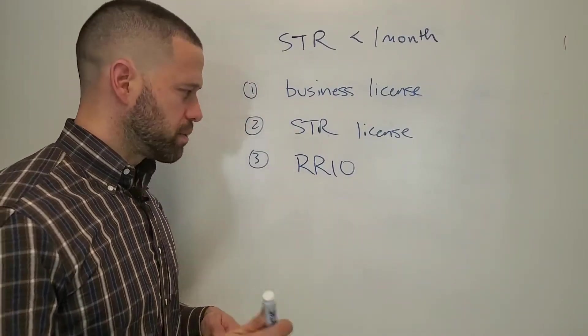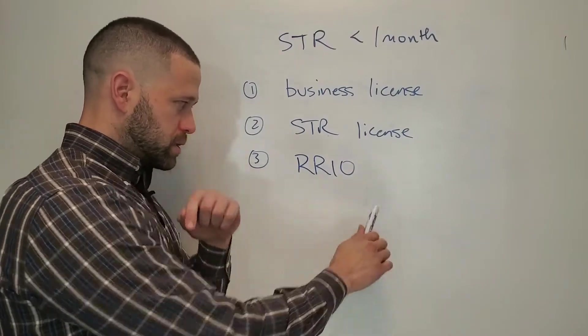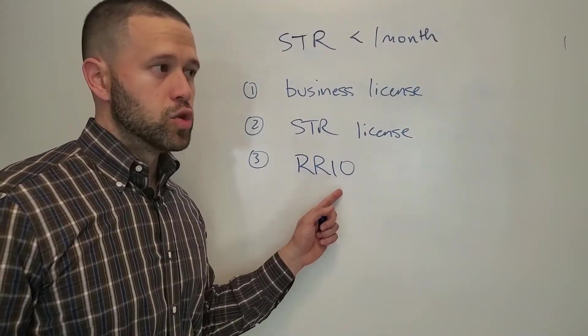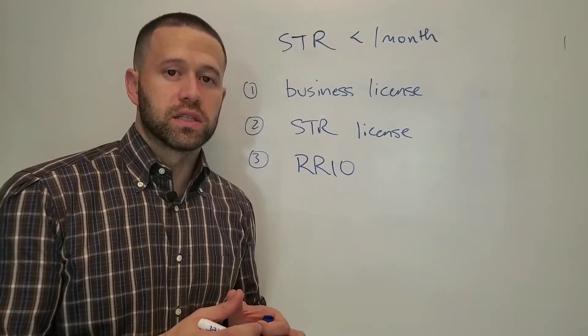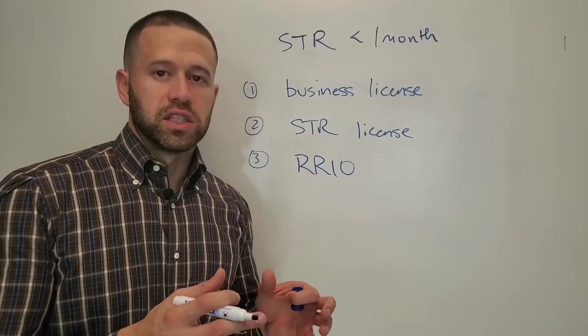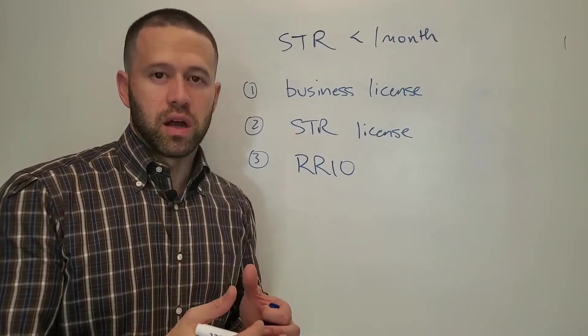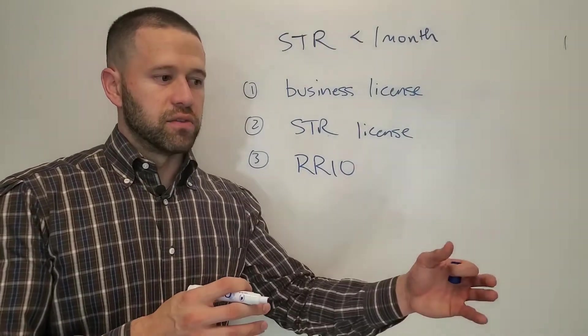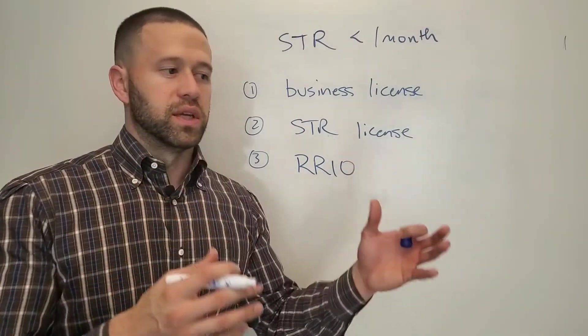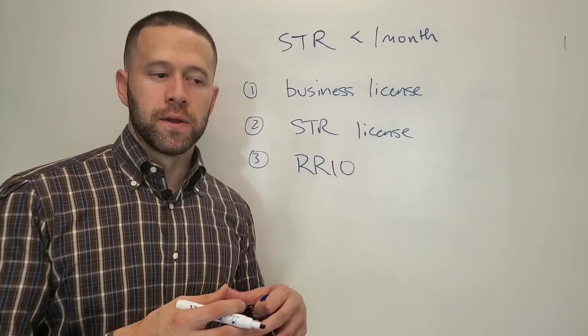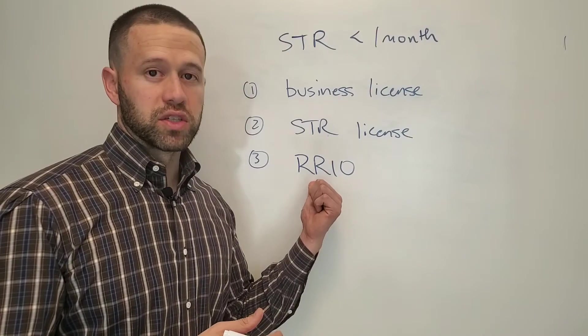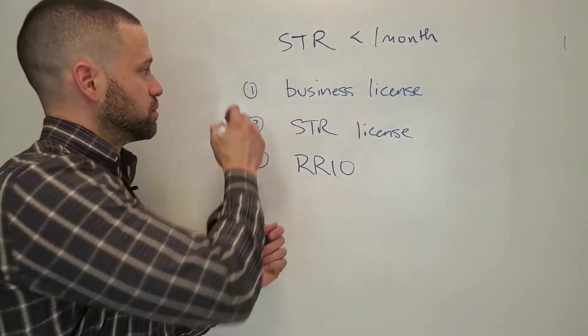A little caveat which might be relevant to some of you is that this particular registration you can avoid if you're just renting out your own residence and not continuously. So for instance, if you live in a home and you're gonna leave for vacation for three weeks and then you're gonna rent the home for three weeks on Airbnb but then you're gonna come back, that's fine. You actually don't need to register on that one, but you're still gonna need these two.